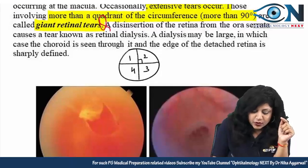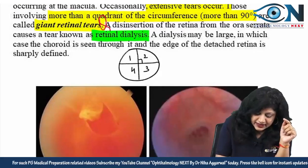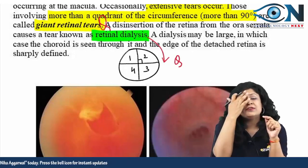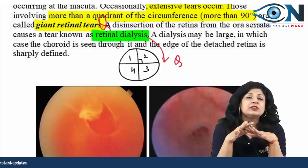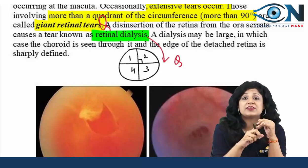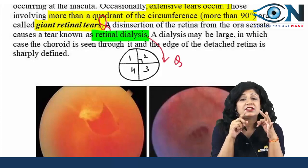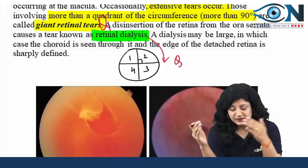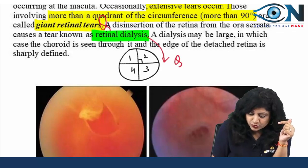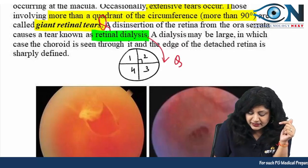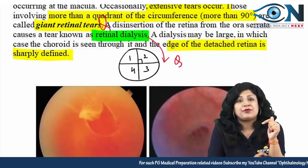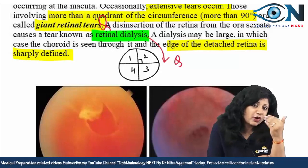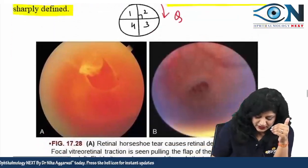A disinsertion of the retina from the ora serrata is called retinal dialysis. Four things must be differentiated: retinal hole, retinal dialysis, giant retinal tear, retinal detachment, and retinoschisis. In dialysis, the choroid is seen through it and the edge of the detached retina is sharply defined.